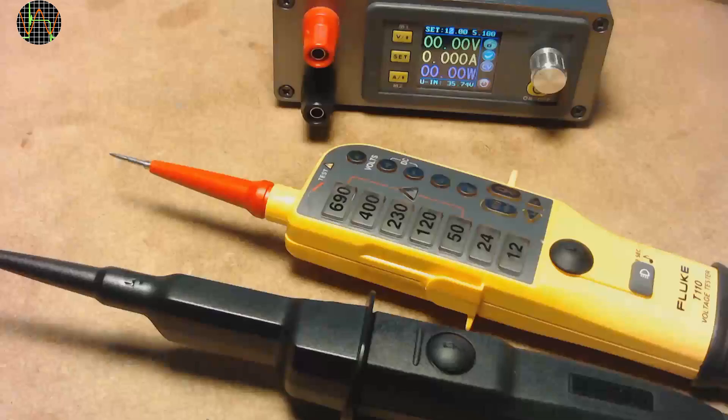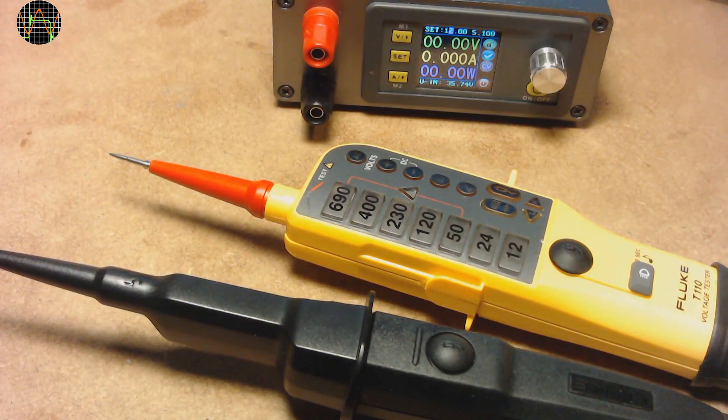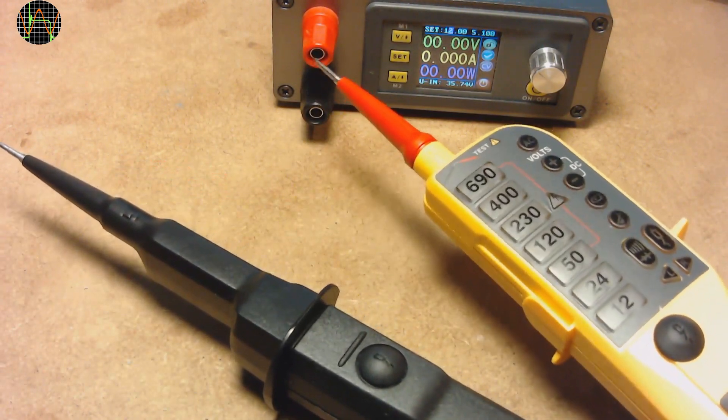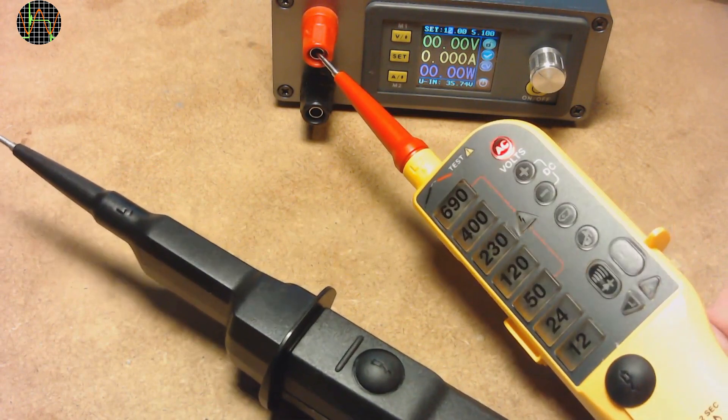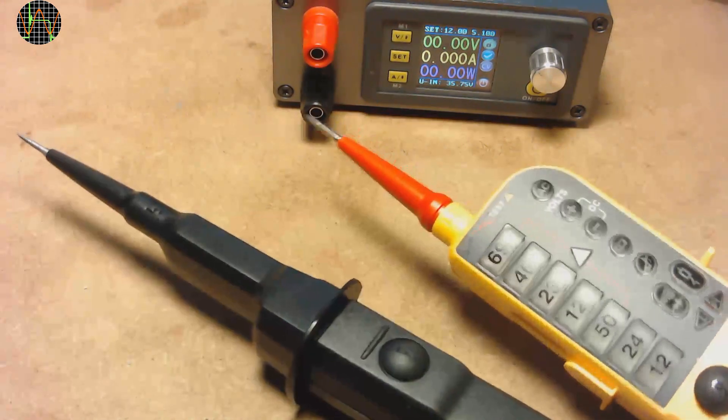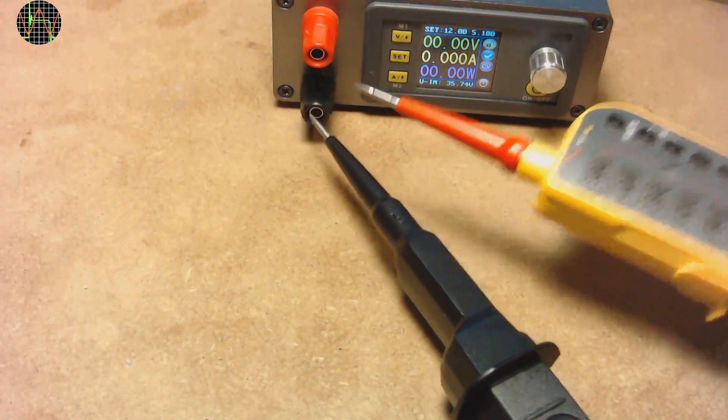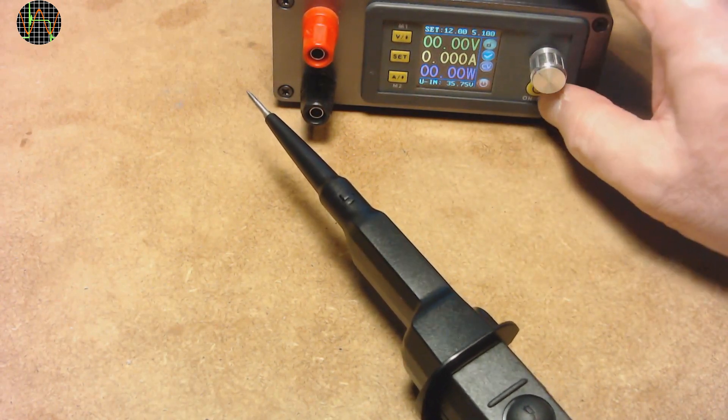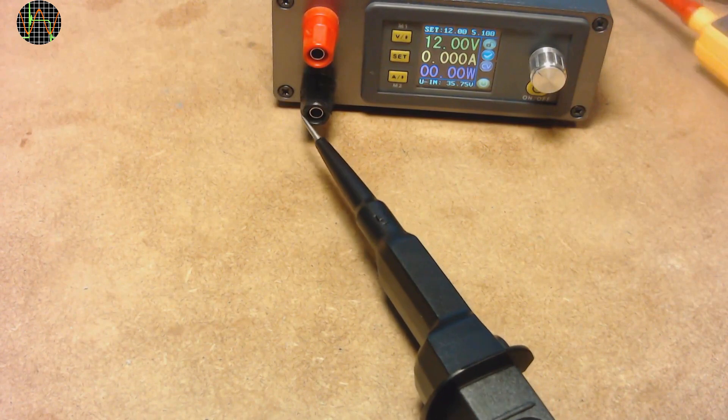The same test against this DIY power supply reveals that it uses a switch mode power supply with a Y capacitor as opposed to the previous one, which uses a fully isolated linear regulator. Just a single pole probing shows that we have a connection to the AC mains phase. It is only through the Y capacitor, but it can still cause tingling when touched and problems with powering sensitive equipment.